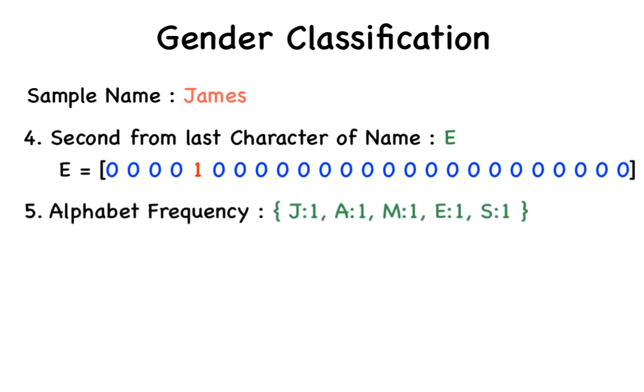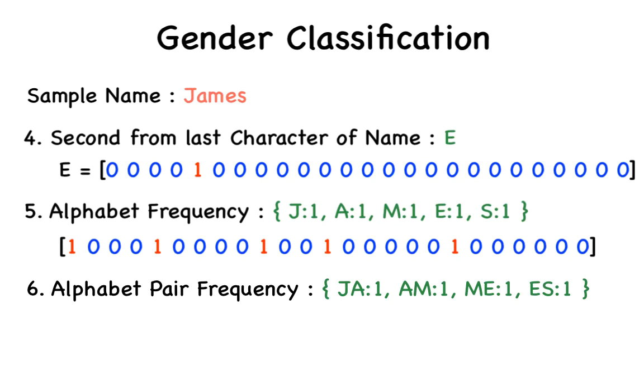The next characteristic, frequency distribution of alphabets, is a tad different. We won't use one-hot encoding here. Instead, we create a 26-dimensional vector with the frequency of occurrences marked for each alphabet. Note that this vector is not one-hot. This vector neither has binary values, nor is only one entry on for every name sample. The sixth characteristic is frequency distribution of alphabet pairs. The first and second alphabets can be one of 26 characters, so the number of possible values is 26 times 26, that is 676. Hence, a 676-dimensional one-hot feature vector is used to represent this entire characteristic.